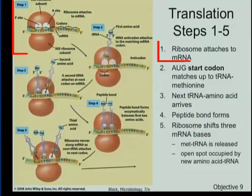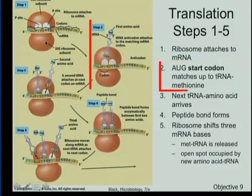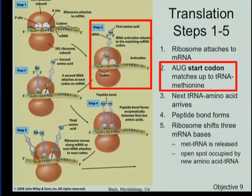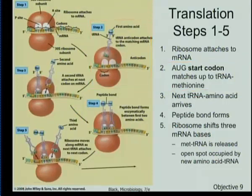In the process of translation, the ribosome attaches and forms on the messenger RNA. It starts at the start codon AUG and matches with the transfer RNA specific to that codon - so the anticodon would be complementary, UAC. AUG is always the start codon, so the anticodon is always UAC, and the amino acid that goes in that spot is methionine. That may not be permanent - it may get edited off later - but it is the first one placed.